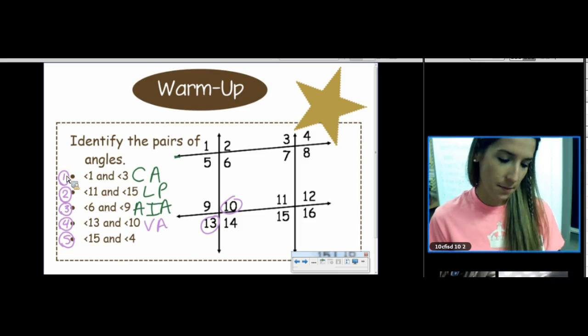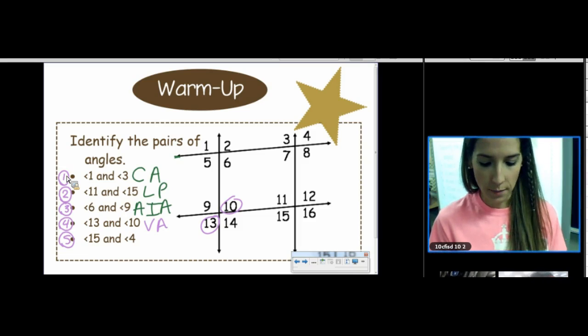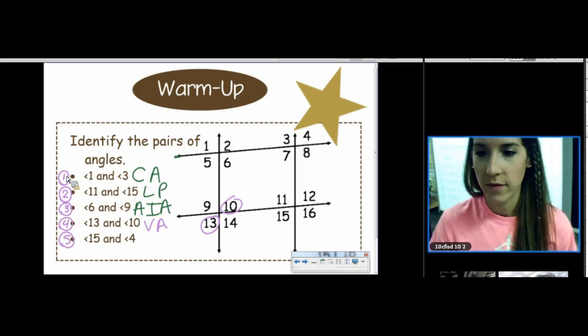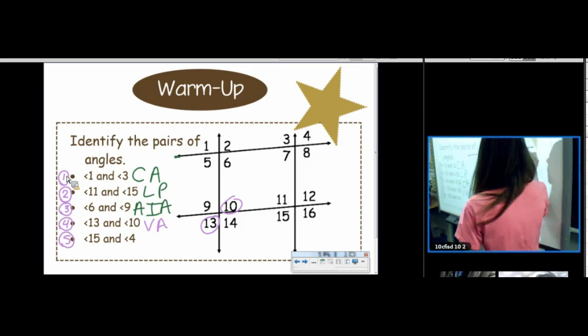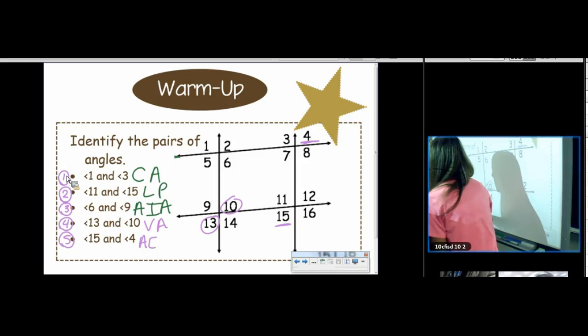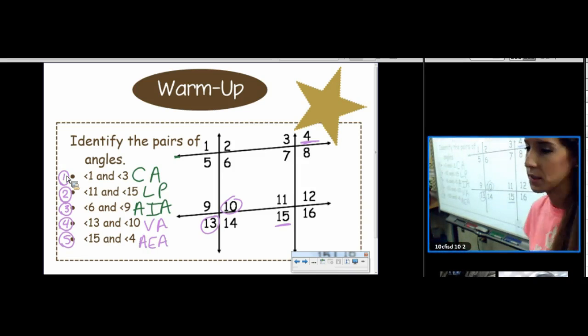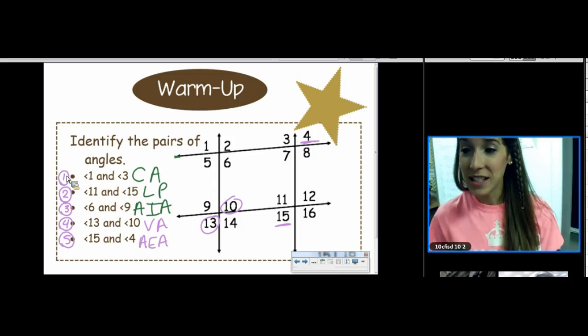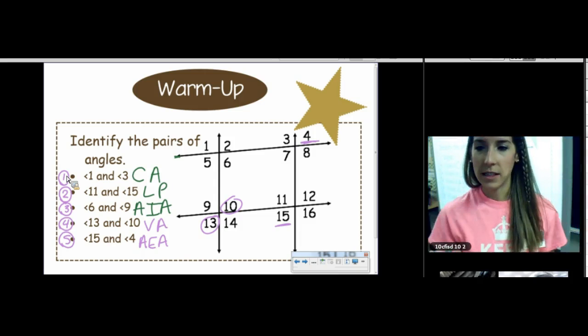Last one. Jane, 15 and 4. Very nice. 15 and 4 are the farthest away two angles can get. Alternate exterior angles. They're on alternate sides and they are outside of those lines that were given.